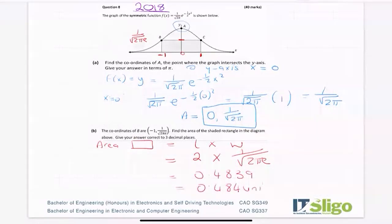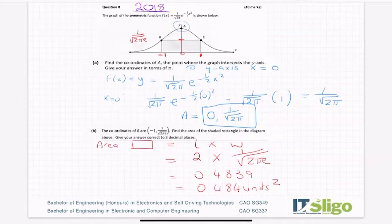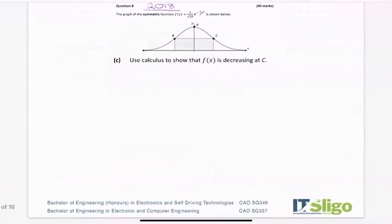I don't know what units it is, so units squared. Your pi button is down the bottom behind the ×10x. And on the Casio calculator, the e button is on the same button, it's just in red, so you would have to hit the alpha button. So that's part a and part b. Part c was when we started to move into calculus.